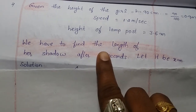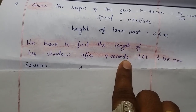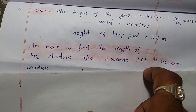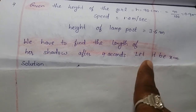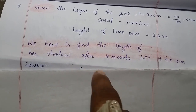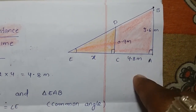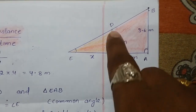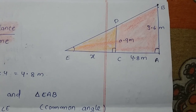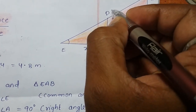Now we have to find the length of her shadow after 4 seconds. Let the length of her shadow after 4 seconds be x meters. Here is the diagram showing the girl at 0.9 m height.